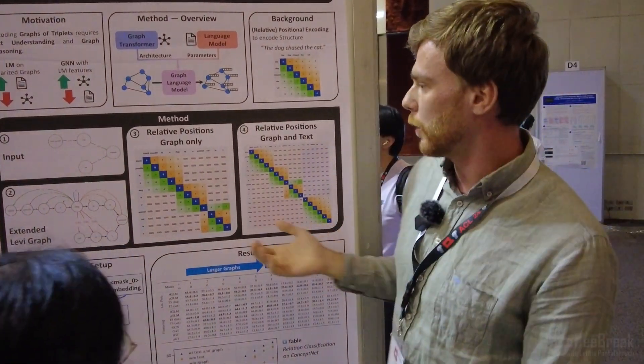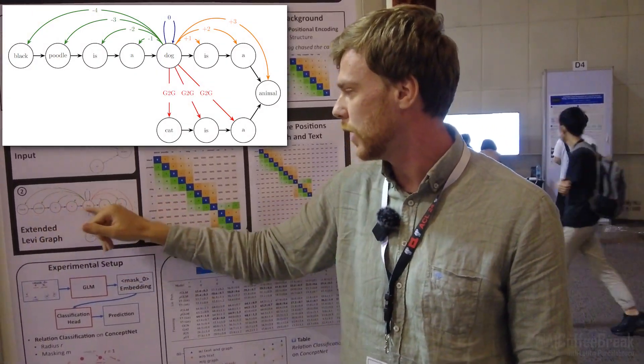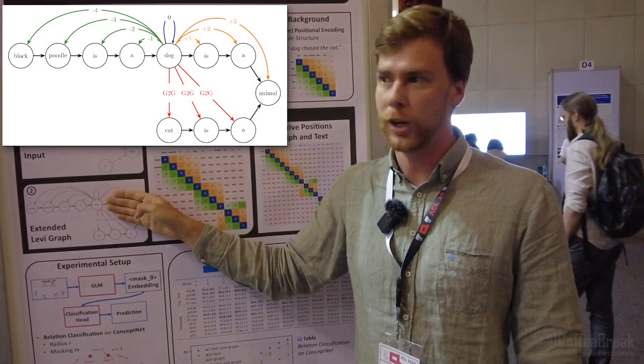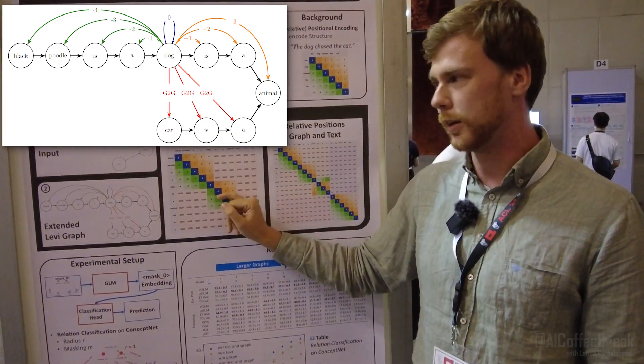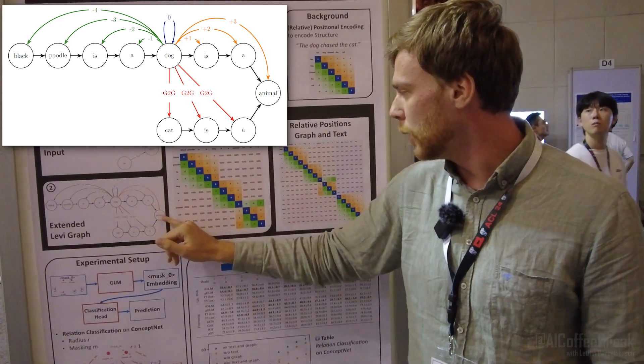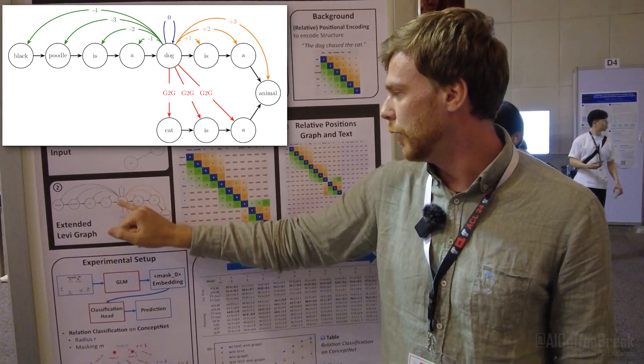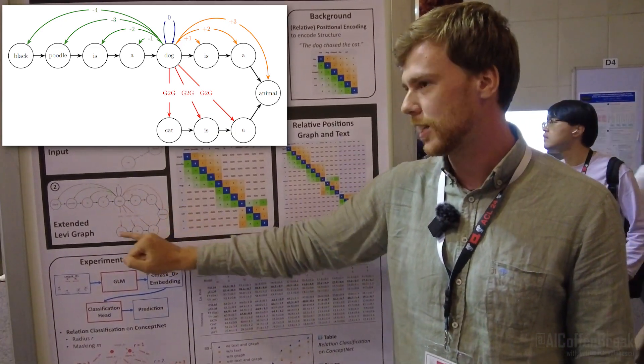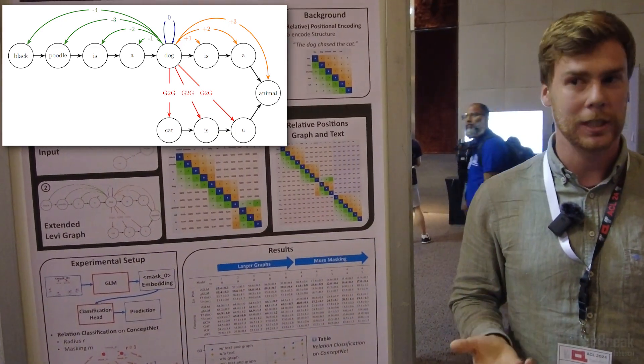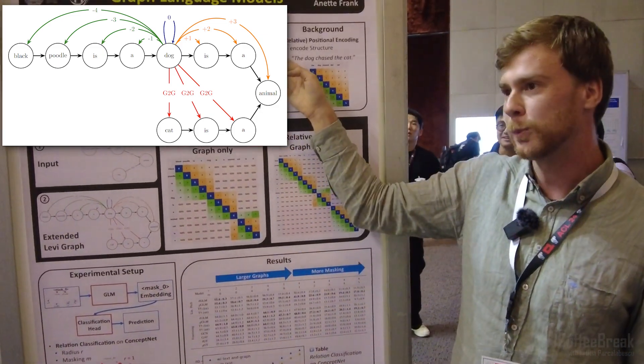The way we do that is for triplets—tokens from the same triplet like 'black poodle is a dog'—we just have basically a normal sentence, so we put the normal relative distances here. Same for 'dog is an animal.' However, if we look at cat and just follow the path, we would get 'dog is an animal a is cat,' which is not a natural language sentence anymore and therefore probably would not work well with our language model parameters.